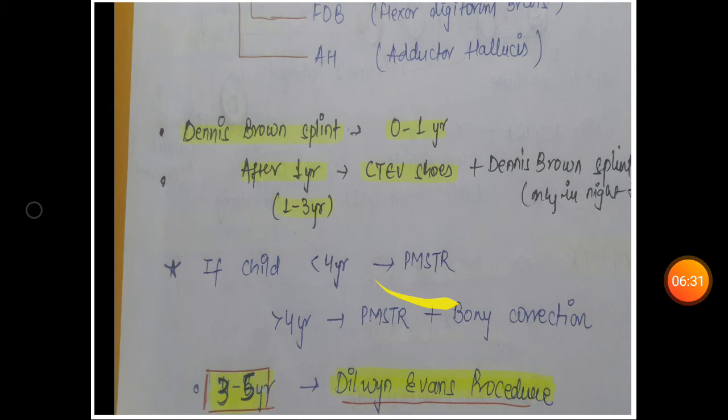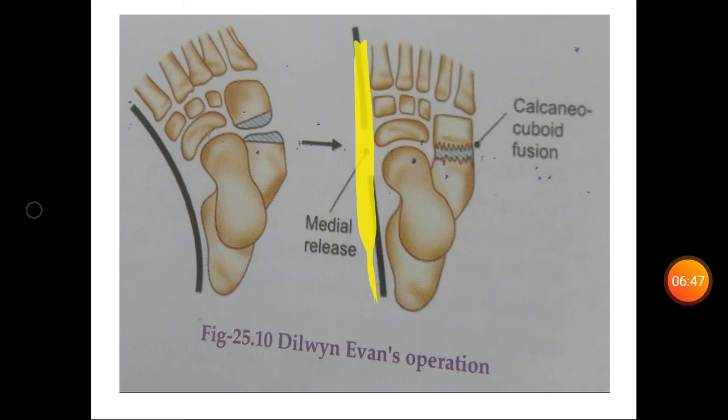If the child is less than four years, PMSDR—posteromedial soft tissue release—is done. More than four years, PMSDR plus bony correction. In between three to five years of age, Delvin Evans procedure: PMSDR on the medial side and calcaneo-cuboid fusion is done.